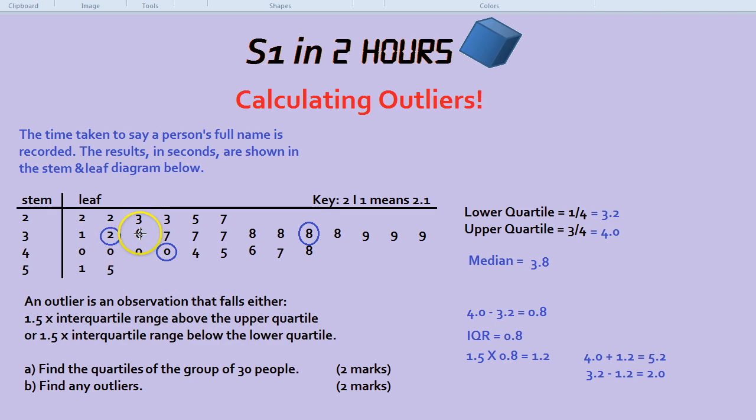This was person number 8. So 9, 10, 11, 12, 13, 14, 15 and 16. So between these two people. Now in this case they both got 3.8 seconds. So halfway between 3.8 and 3.8 is just 3.8. So the median is 3.8.